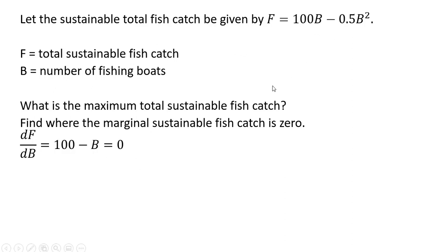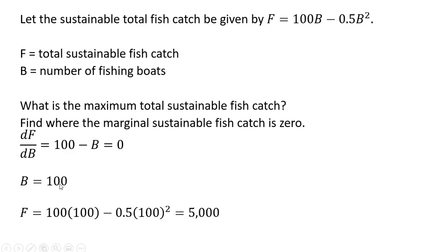The derivative of 100B is 100, and the derivative of minus 0.5B squared is minus B. Solving for B, we get B equals 100. Plugging 100 boats into our total sustainable fish catch equation gives us 5,000, so the total sustainable fish catch is 5,000.